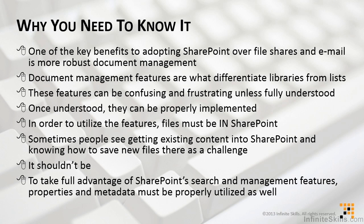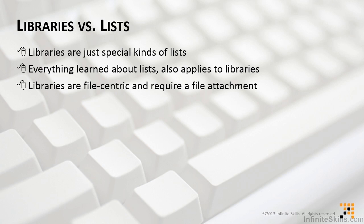In order to take full advantage of all that SharePoint can do — including the ability to find content and manage everything we have — we simply need to know how to do these things, as well as making sure that properties and metadata are also being properly utilized. When it comes to comparing libraries versus lists, the KISS principle applies: keep it simple. The first thing to remember is that libraries are just special kinds of lists. Everything you know about lists also applies to libraries — primarily that libraries are made up of one or more columns and also contain different views. What makes a library different from a list is that a library must have a file attachment. They're file-centric, whereas lists could be just data.